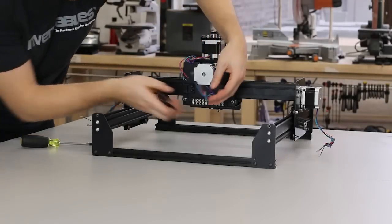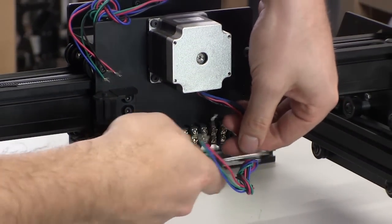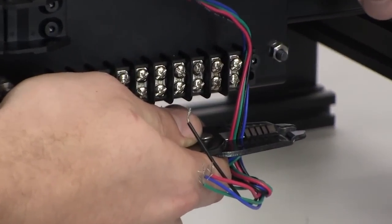Now, we'll wire the X-axis motor to the terminal block on the back of the X-carriage plate. Measure out the correct length of wire from the motor.